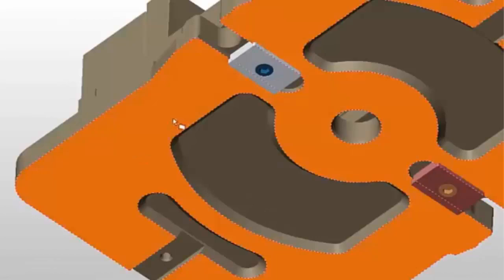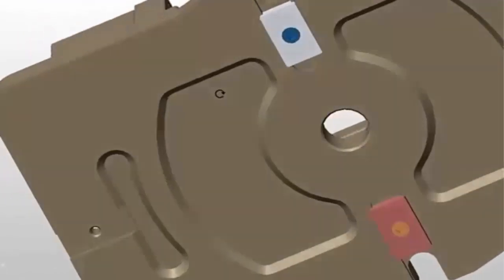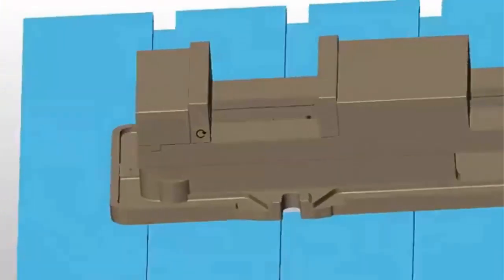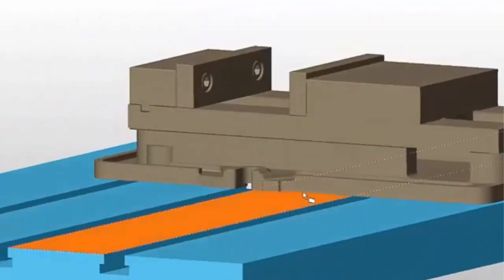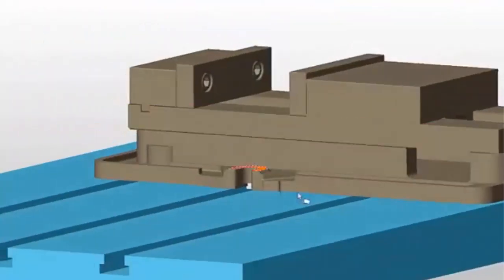The fantastic thing about using tenons is that once you place that vice on there, it's dead square and it's always in the same position on the Y-axis. So effectively, once I bolt that vice down, the only thing that isn't fixed is the X-axis.